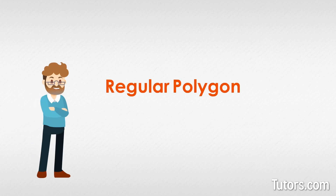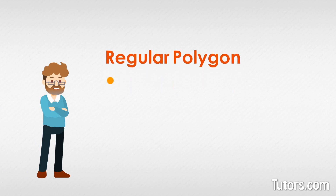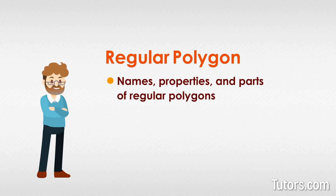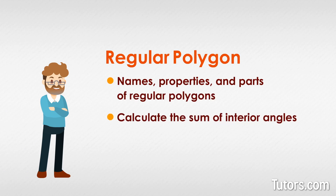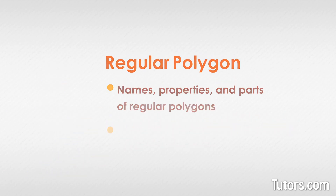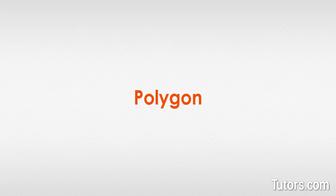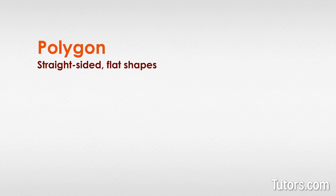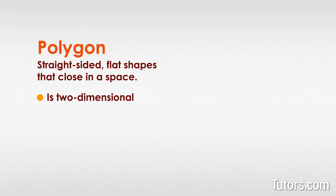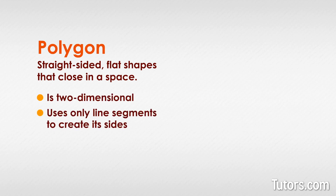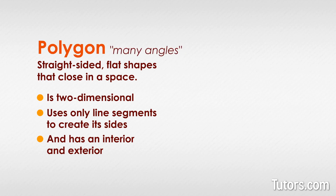Regular polygons are the creme de la creme of polygons — a class unto themselves. This lesson will teach us the names, properties, and parts of regular polygons, and we will learn to calculate the sum of interior angles of regular polygons. Polygons are straight-sided flat shapes that close in a space, meaning every polygon is two-dimensional, uses only line segments to create its sides, and has an interior and exterior. The word polygon comes from Greek and means 'many angles,' because all simple polygons have as many sides as they have angles.